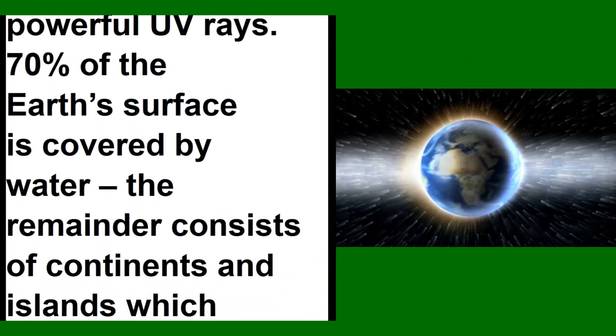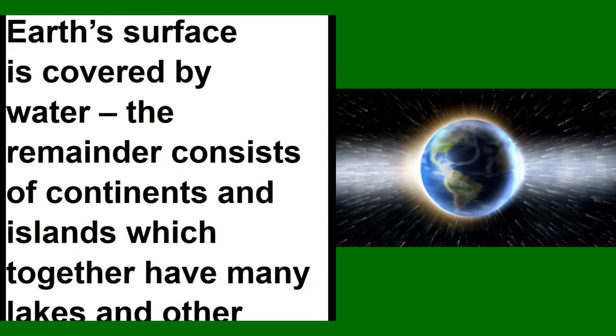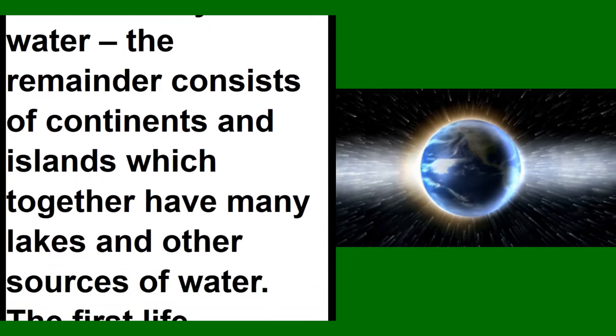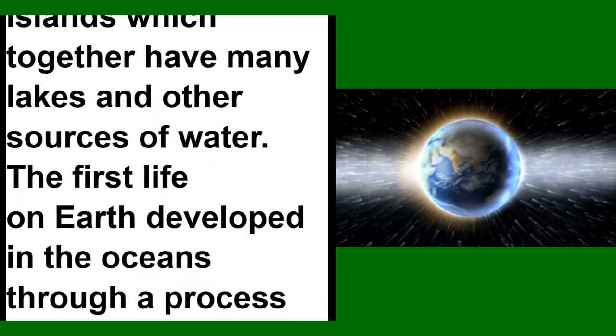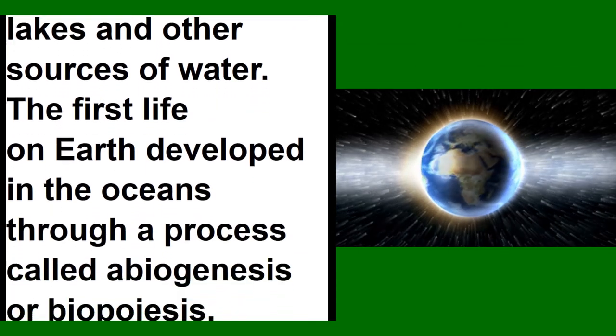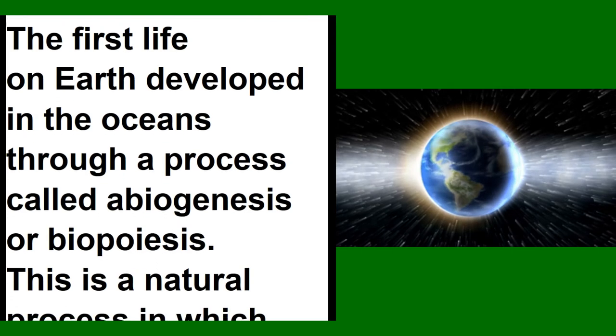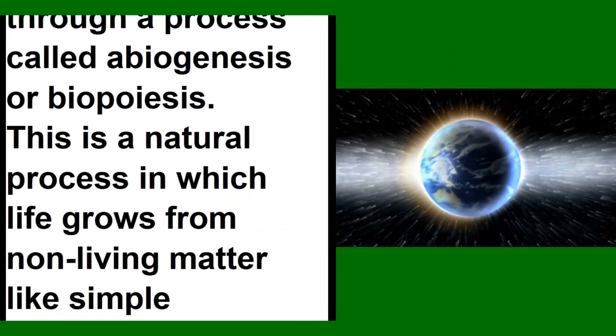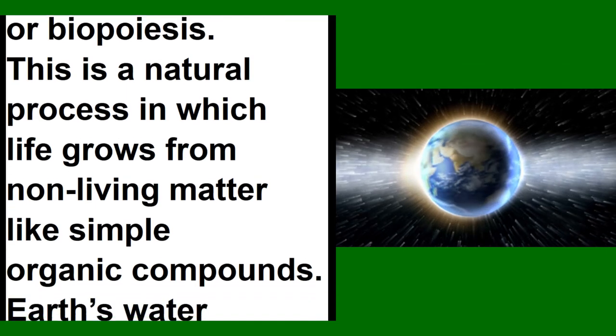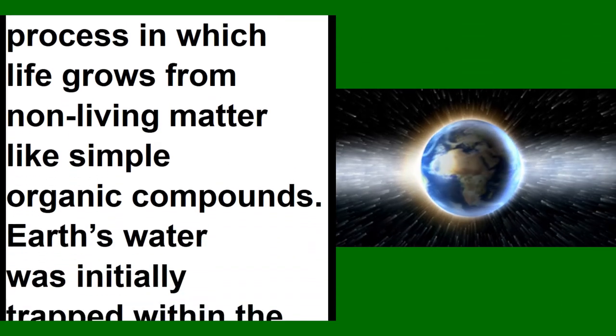The first life on Earth developed in the oceans through a process called abiogenesis or biopoiesis. This is a natural process in which life grows from non-living matter like simple organic compounds. Earth's water was initially trapped within the planet and was brought to the surface over time by volcanic activity.